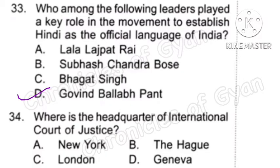Question 34: Where is the headquarter of the International Court of Justice? It is located at the Peace Palace in The Hague, which is situated in the Netherlands. The correct answer is Option B.